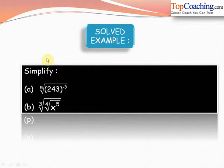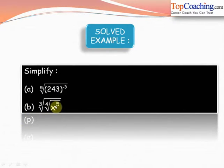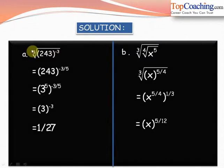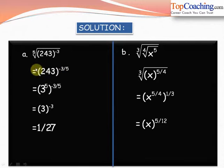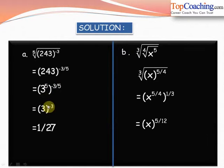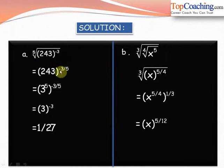Let's solve examples based on rational exponents. Simplify: part a — the fifth root of 243 to the power of minus 3. This can be written as 243 to the power of minus 3 by 5. Since 243 equals 3 to the power of 5, the expression becomes 3 to the power of 5 whole to the power of minus 3 by 5. Multiplying the exponents, 5 and 5 cancel, giving 3 to the power of minus 3, which equals 1 by 3 cubed, which equals 1 by 27.